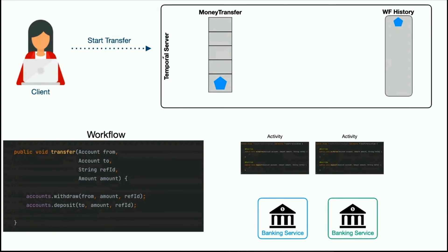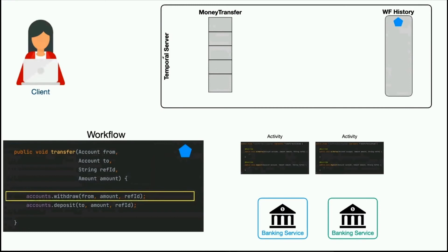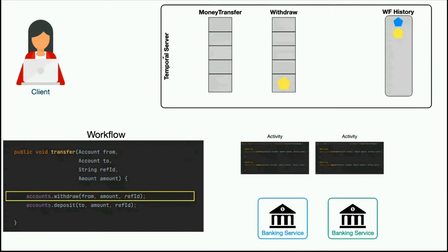The worker polls the task queue, receives the task, and starts executing the workflow. It hits the withdraw operation — a blocking call — emitting a 'schedule activity: withdraw' command back to the service. The service transactionally creates an activity task and updates the workflow history. The activity worker picks up the task, executes it, and reports back the result. Activities support very long-running tasks via heartbeating — they can run for five or ten days, and if they fail, they can be retried for months if necessary.